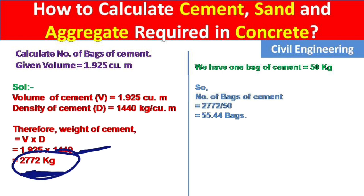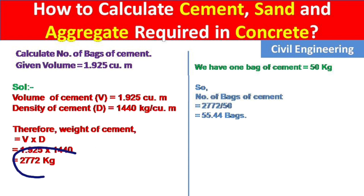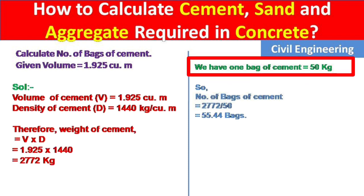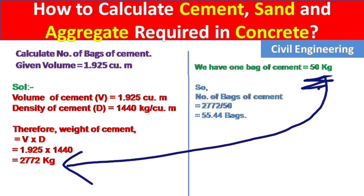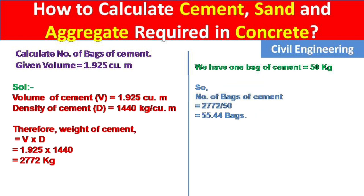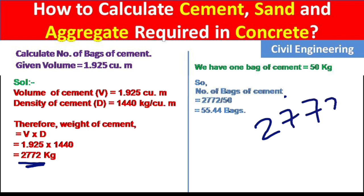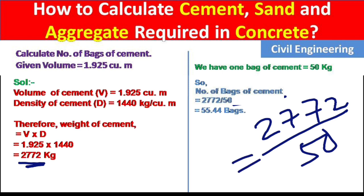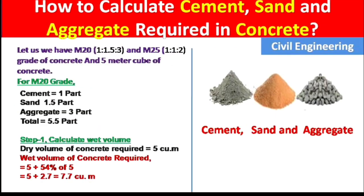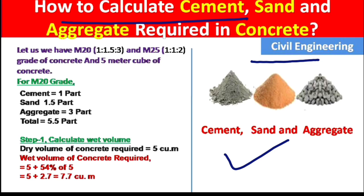To convert into bags: weight of cement = volume × density = 1.925 × 1440 = 2772 kg. Since one bag of cement equals 50 kg, number of bags = 2772 ÷ 50 = 55.44 bags of cement. In this way we can calculate the total quantity of cement, sand and aggregate, and also convert the volume of cement into number of bags. Please like this video and subscribe to the channel for new updates about civil engineering. Thank you.